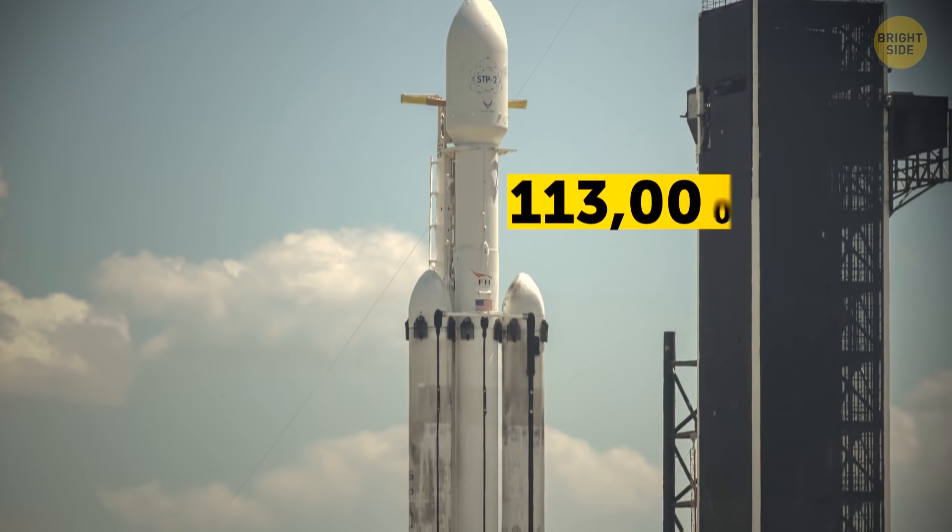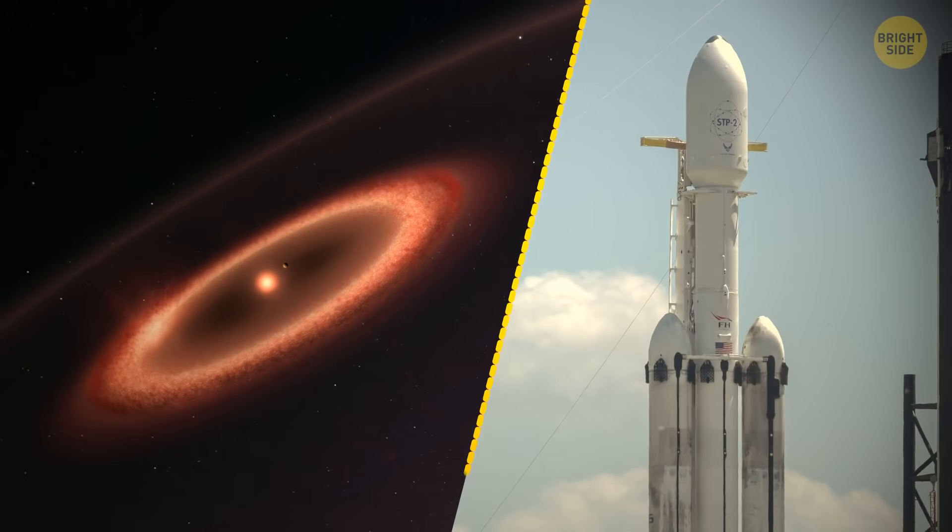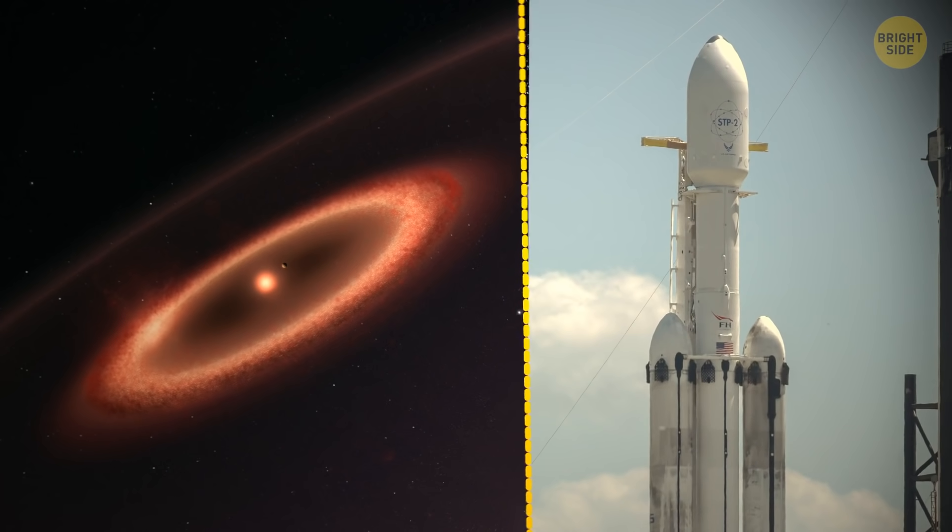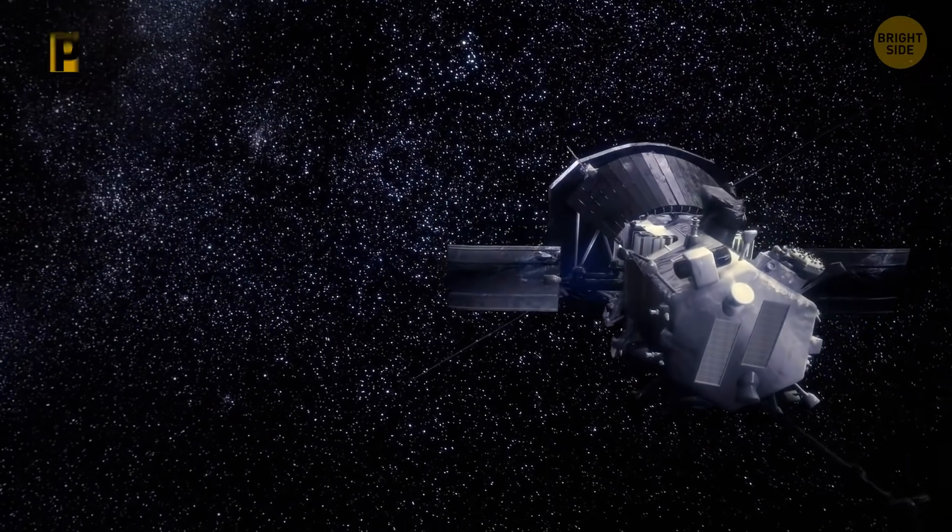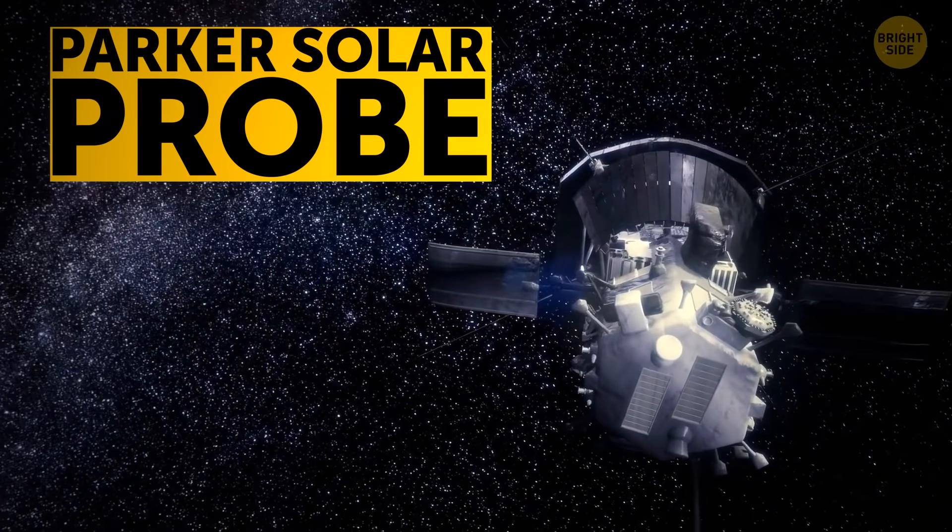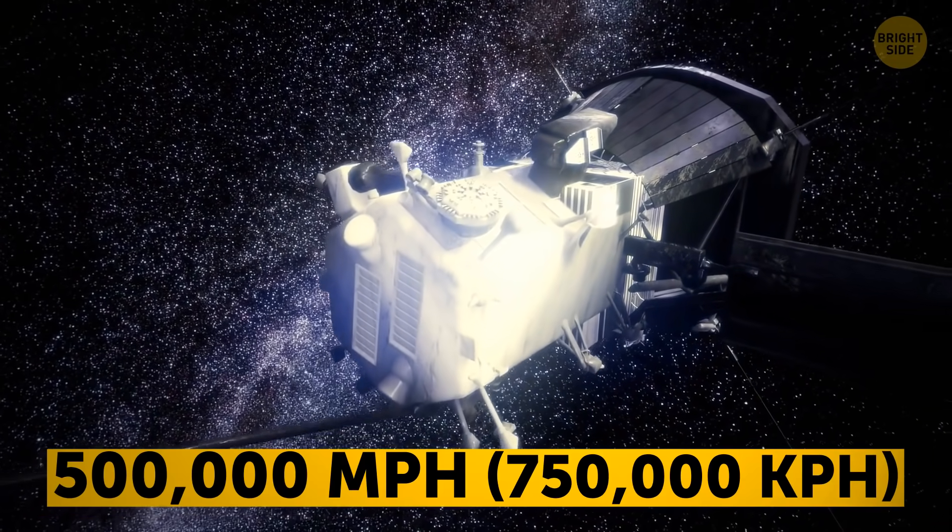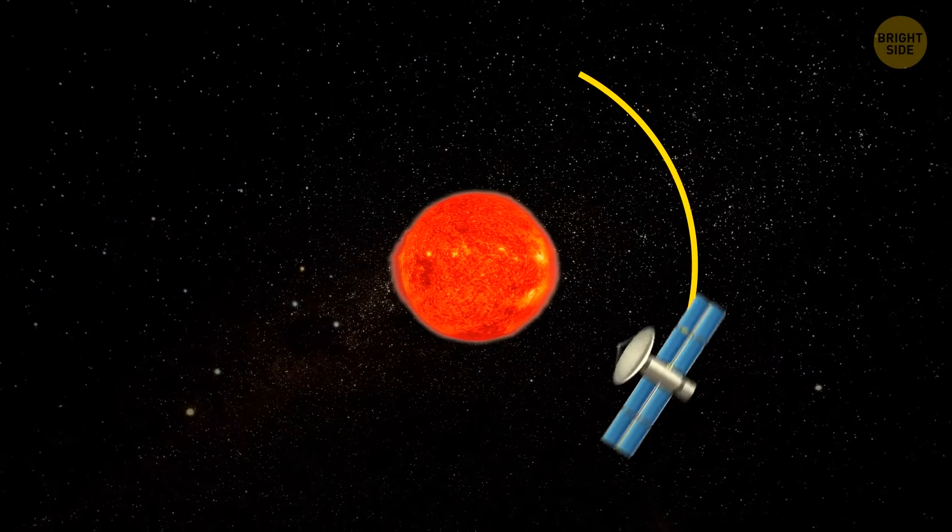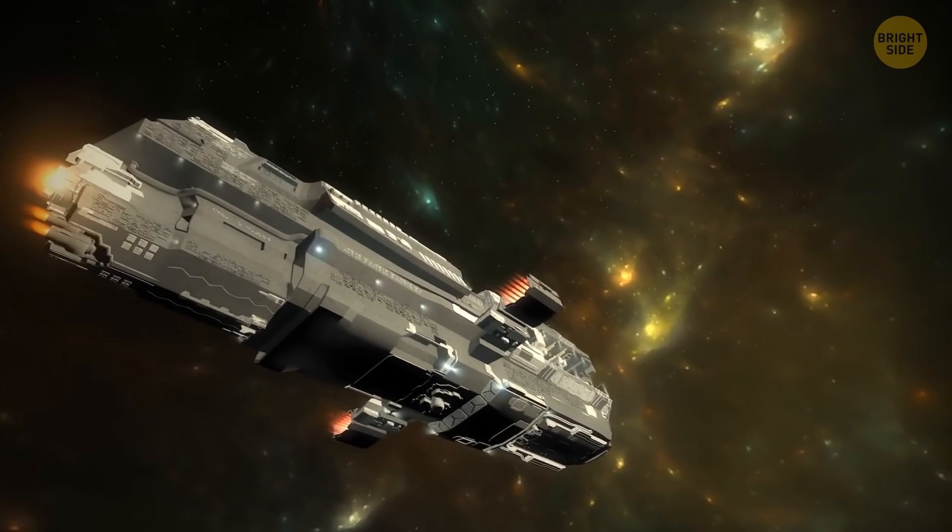It would take such a rocket about 113,000 years to overcome the distance to the closest star. So, you walk through the garage further and see the fastest human-made space object ever: the Parker Solar Probe. Its speed is a little less than half a million miles per hour. But it uses the gravity of the sun to accelerate.